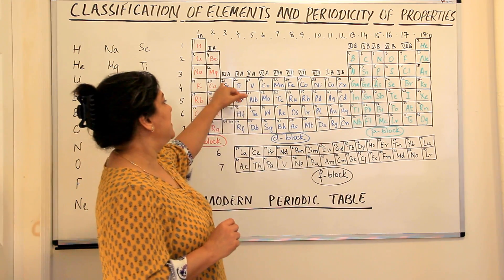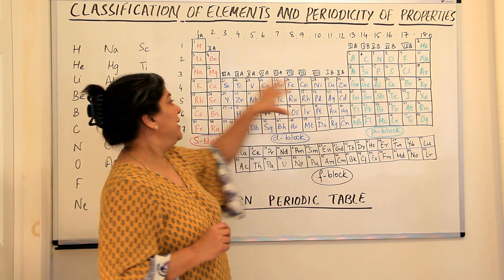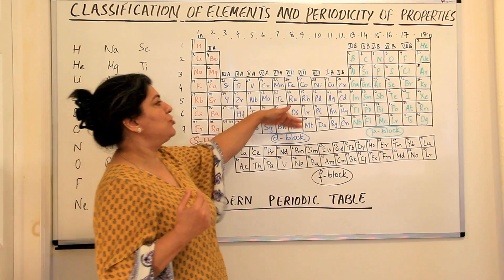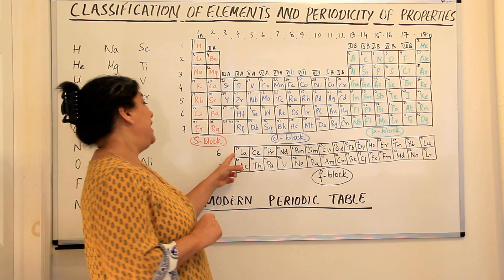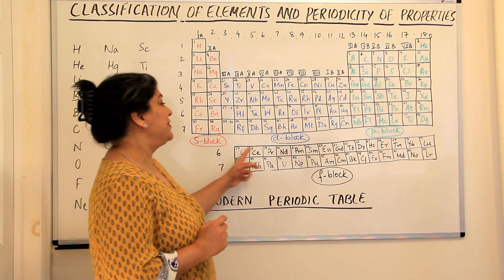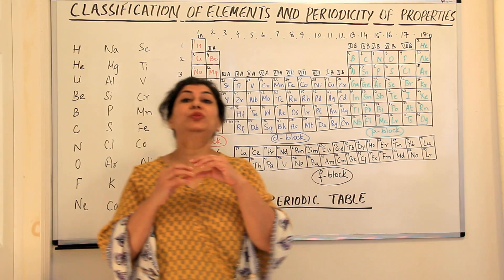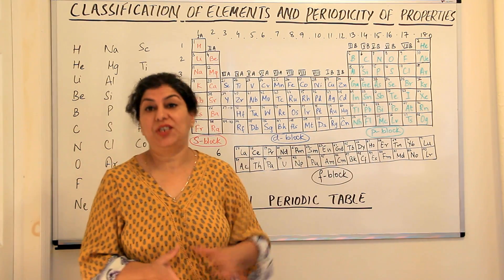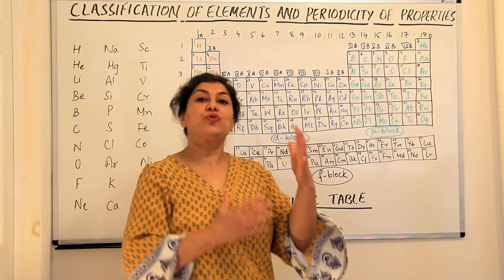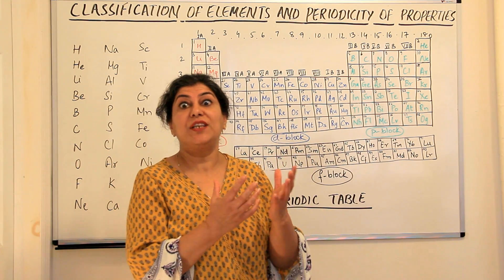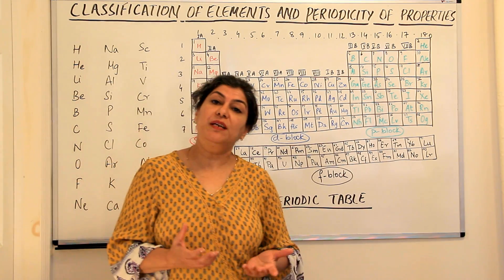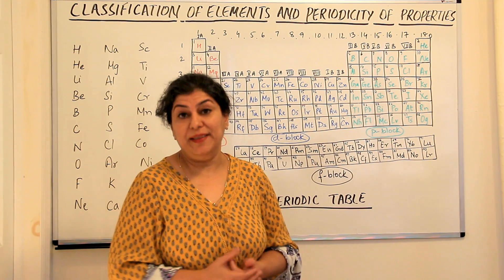The next 10 elements — that is from 21 to 30 — is the first transition series, and they help us to know the properties of these transition elements. And if we learn the symbols of the elements from 57 to 71, we know the lanthanide series, which forms the inner transition elements. The rest of the elements you don't have to memorize, because as you study the groups you learn them gradually.